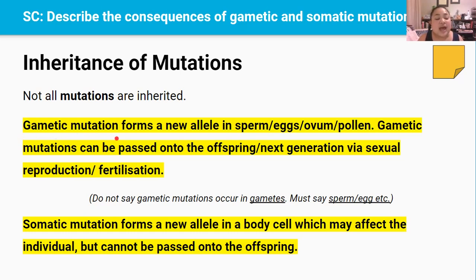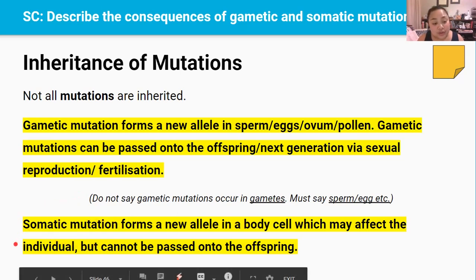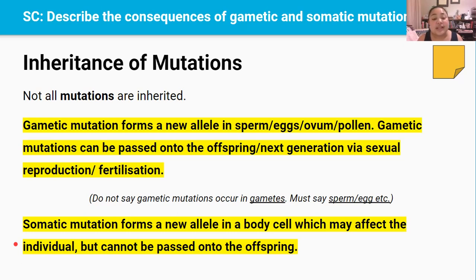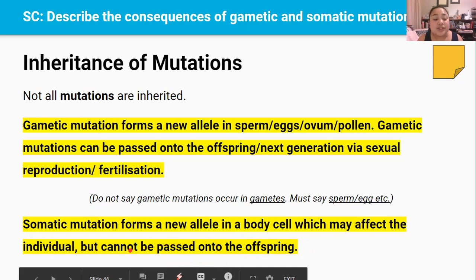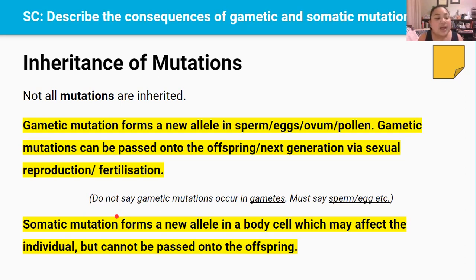Gametic mutations — mutations that happen in gametes — aren't just limited to the person they happened in. They can actually be inherited and transferred onto future generations through sexual reproduction and fertilization. Whereas mutations that occur in body cells, called somatic mutations, will not be inherited, but they can affect the individual during their lifetime. The important thing is they can't be passed onto offspring. For example, if a mutation happened in my skin cell, a somatic cell, it will not be passed onto my children because skin cells are not used during sexual reproduction. But if a mutation happened in the eggs — the gametes — inside my ovaries, the mutation will be passed onto my children because eggs are used for sexual reproduction.